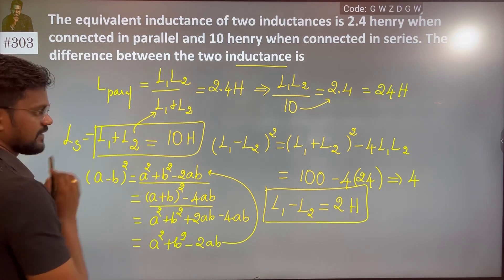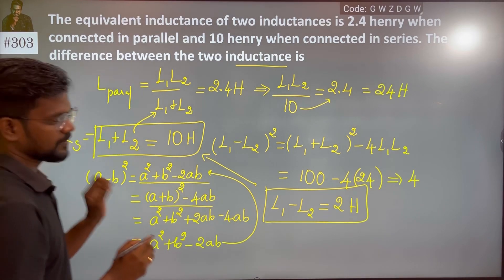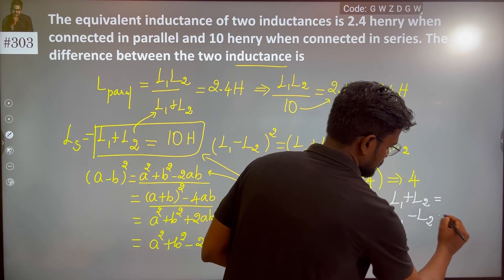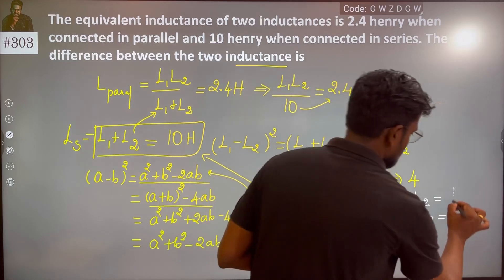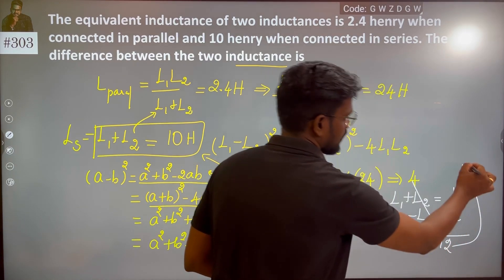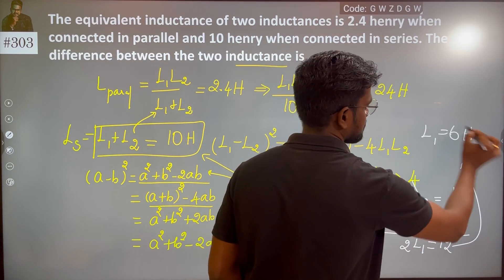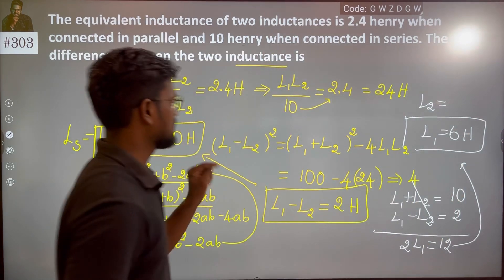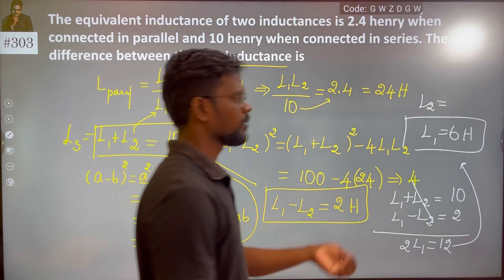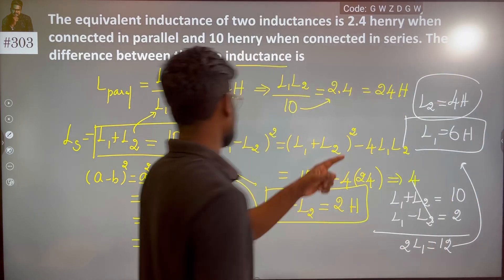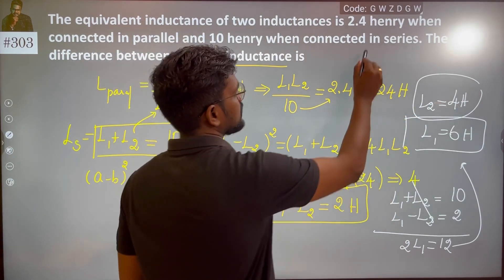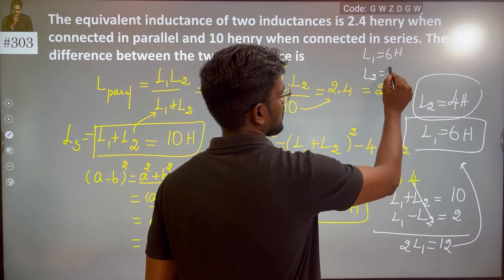We have L1 plus L2 equals 10 and L1 minus L2 equals 2. Solving these: L1 is 6 Henry. Since the series combination L1 plus L2 is 10, L2 equals 10 minus 6, which is 4 Henry. The answer is L1 equals 6 Henry and L2 equals 4 Henry.